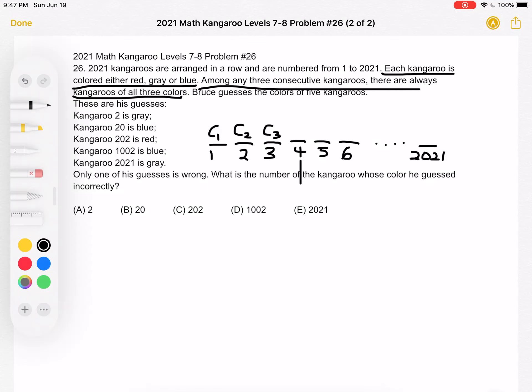Because again we know that among any three consecutive kangaroos there are always kangaroos of all three colors. So let's take a look at what color we would have for kangaroo number 4. And again we're just doing this to figure out if there are any patterns. Well if we look at kangaroos 2, 3, and 4, we already have color 2 and color 3, so that would mean that we would have to have color 1 for the kangaroo numbered 4.